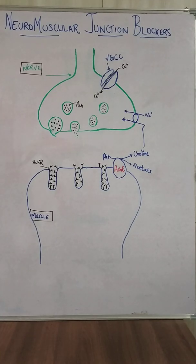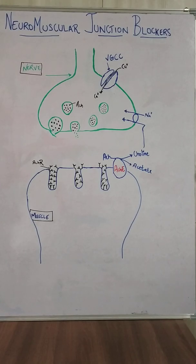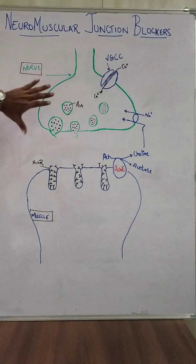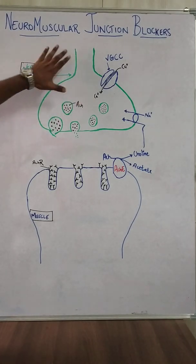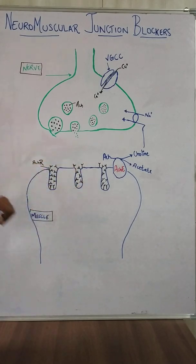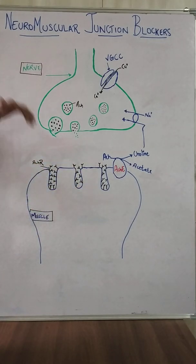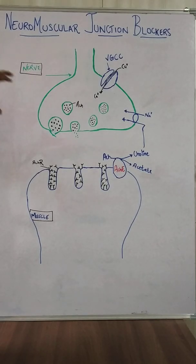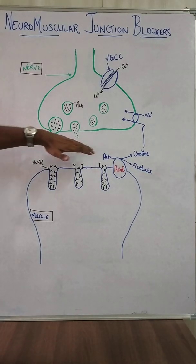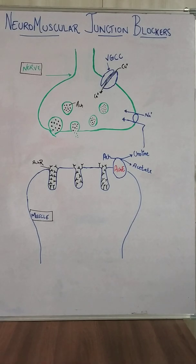Welcome back. In this video we'll be discussing neuromuscular junction blockers. There is an outline here — this is the nerve and this is the muscle. In the previous video we discussed the neuromuscular junction events; in this video we'll discuss the agents which act on this neuromuscular junction.